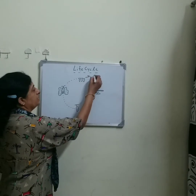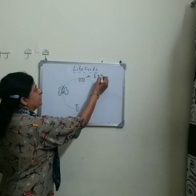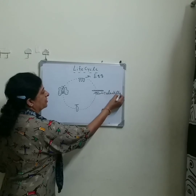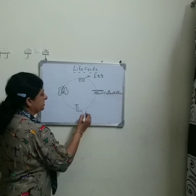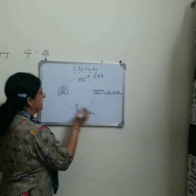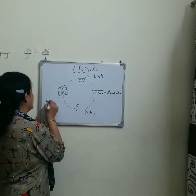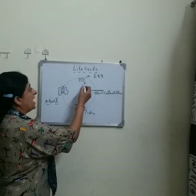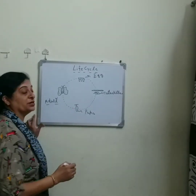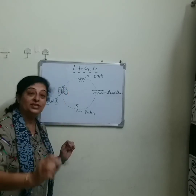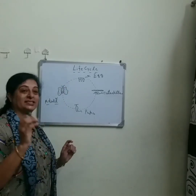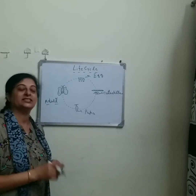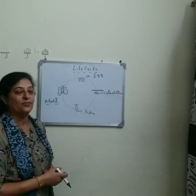The first stage is egg. The second stage is caterpillar. The third stage is pupa. And the fourth stage is an adult butterfly. From the egg up to the adult butterfly, there are many changes going on, and these changes are known as metamorphosis.